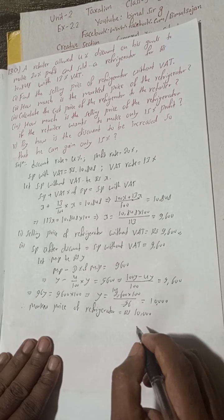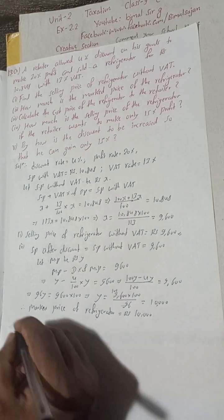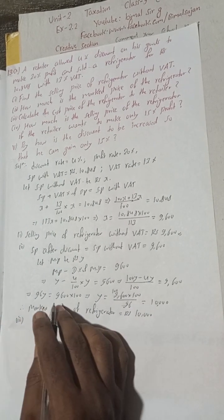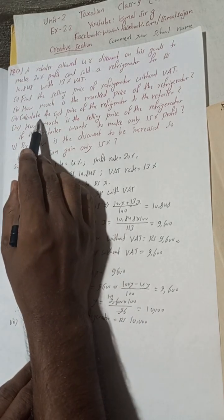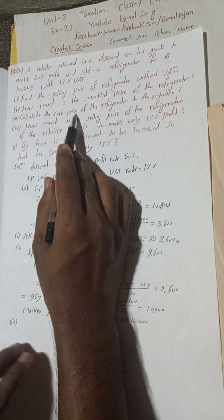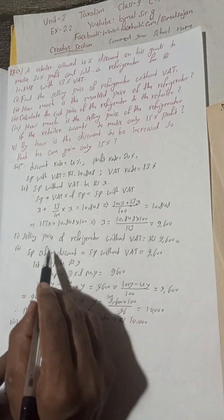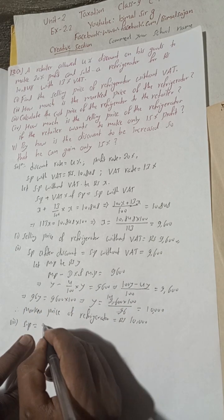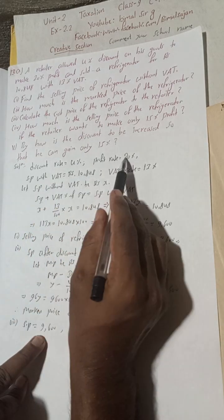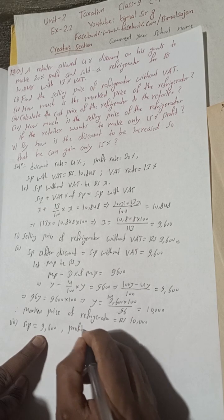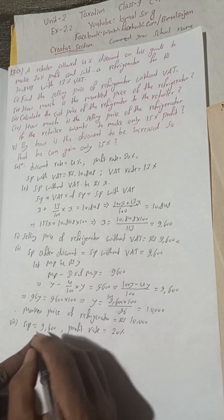Part (3): calculate the cost price of the refrigerator to the retailer. We already found SP after discount = Rs 9,600, and profit rate = 20%. Using the formula: CP = (100 × SP) ÷ (100 + profit%).